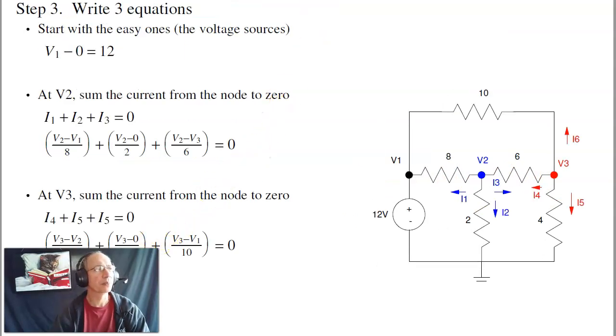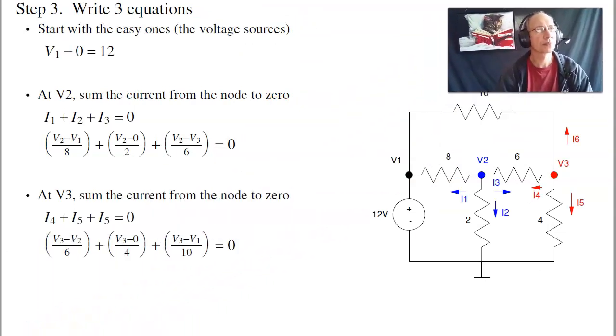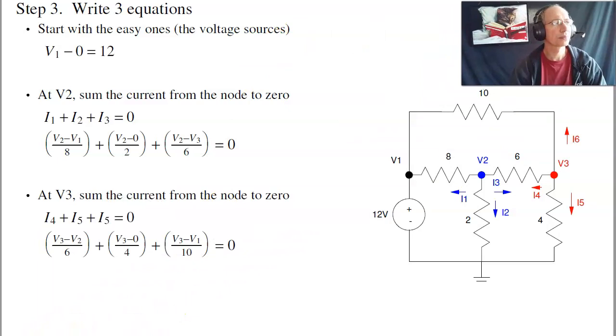Now start writing them. What I'm going to do is start with the voltage sources. Those are the easy equations. This voltage source says that V1 minus zero equals 12. That's one equation. I need two more.